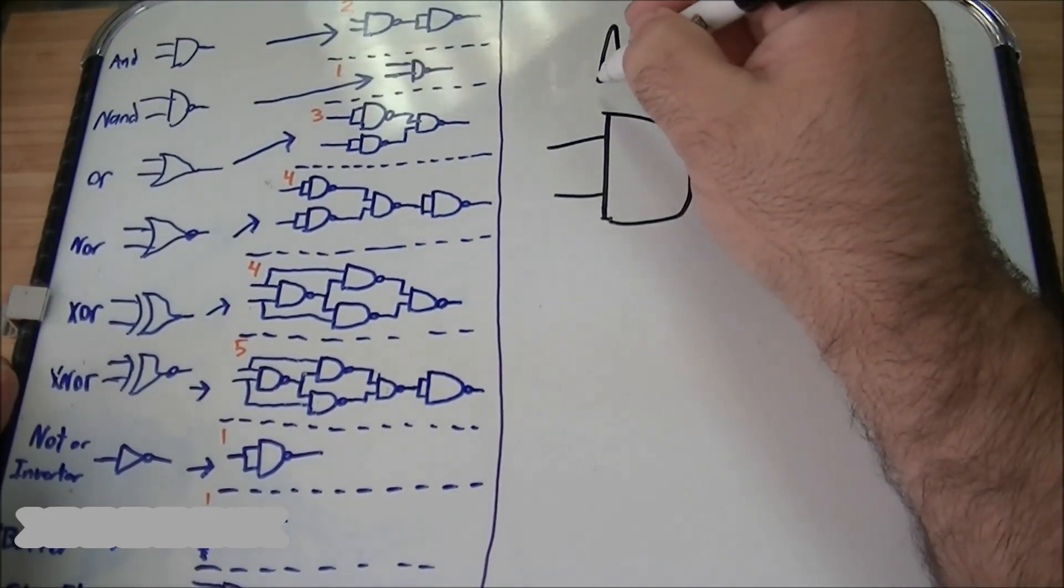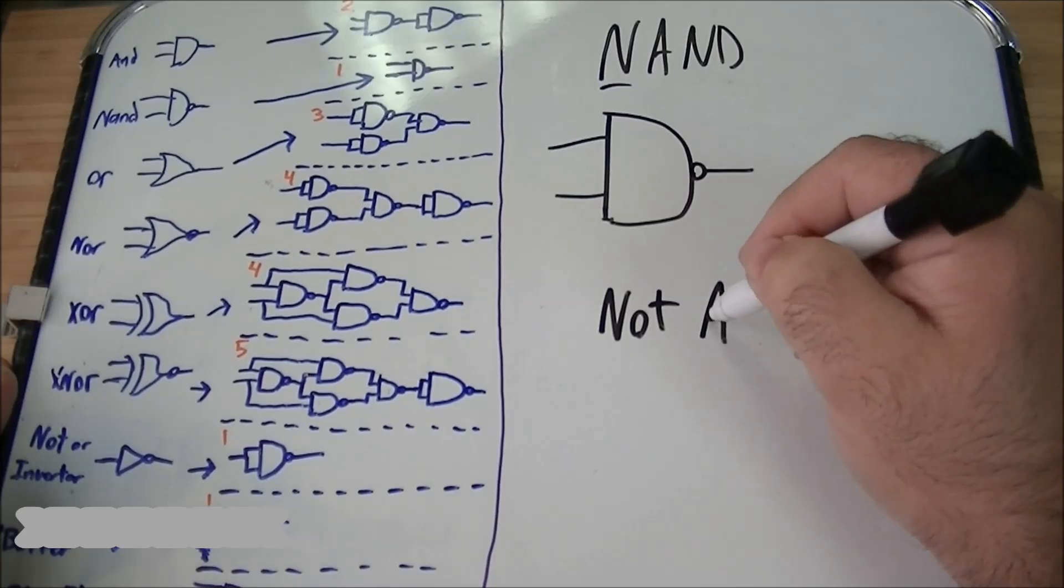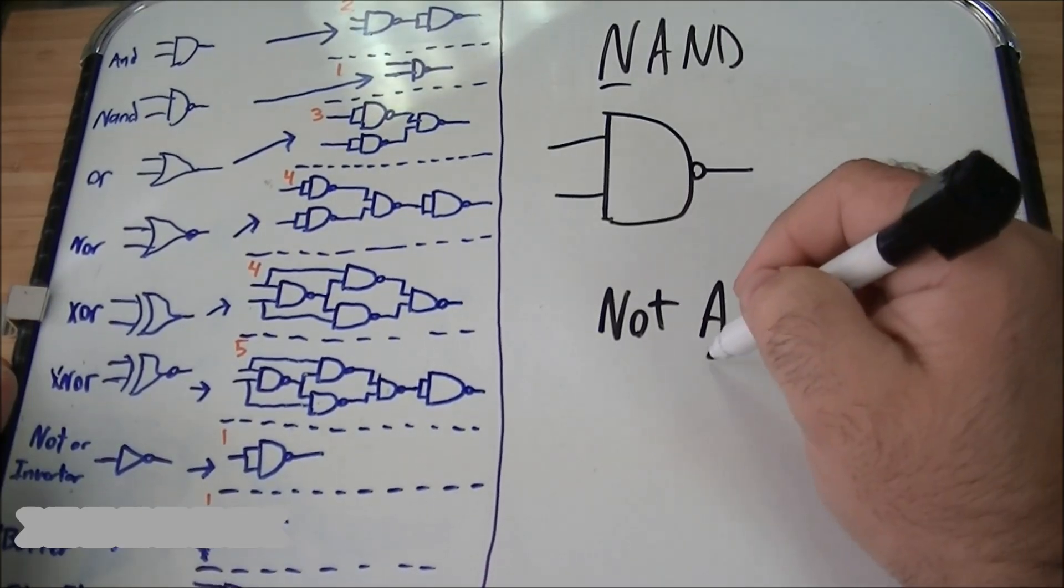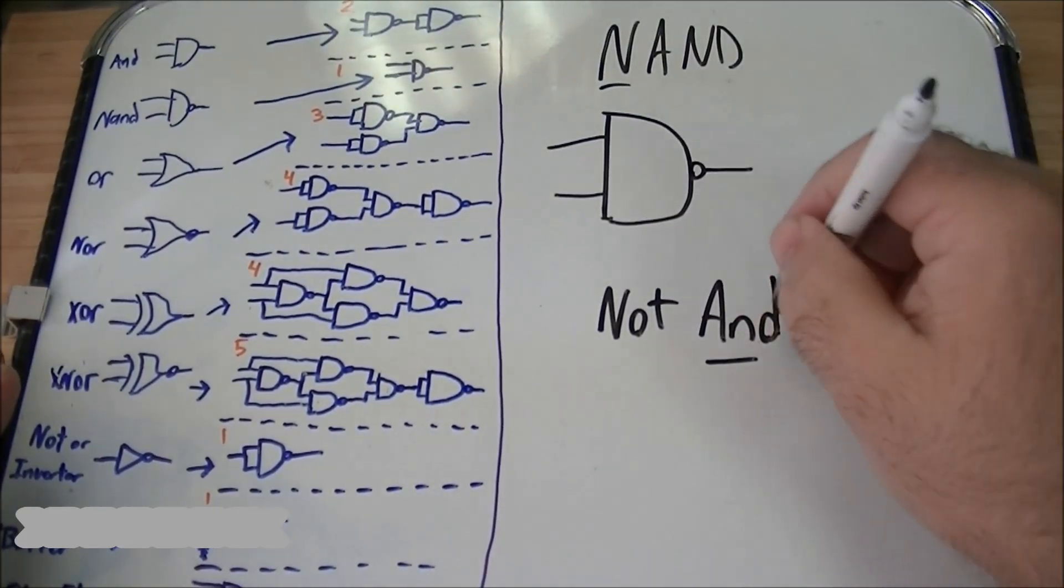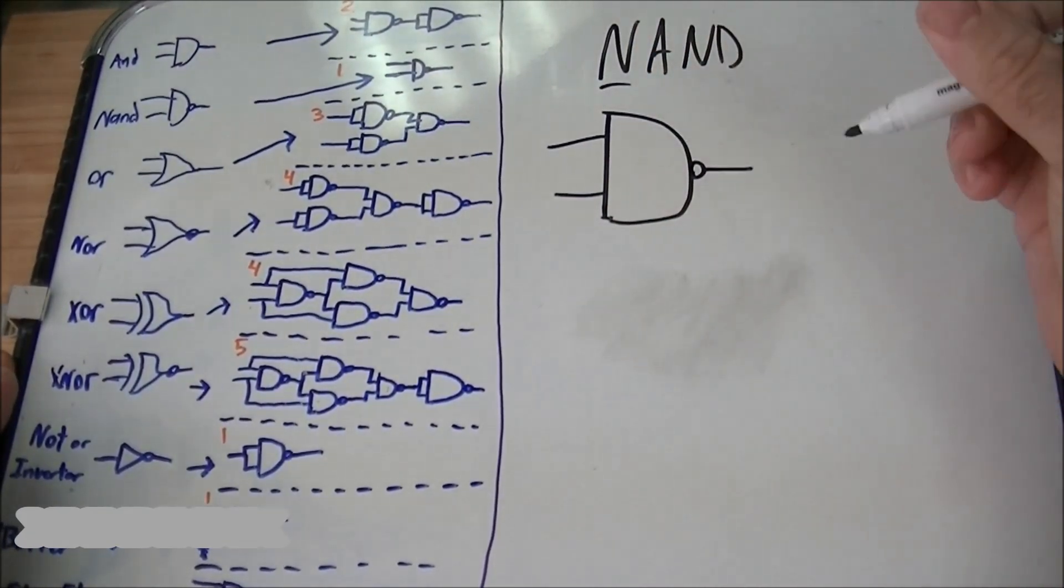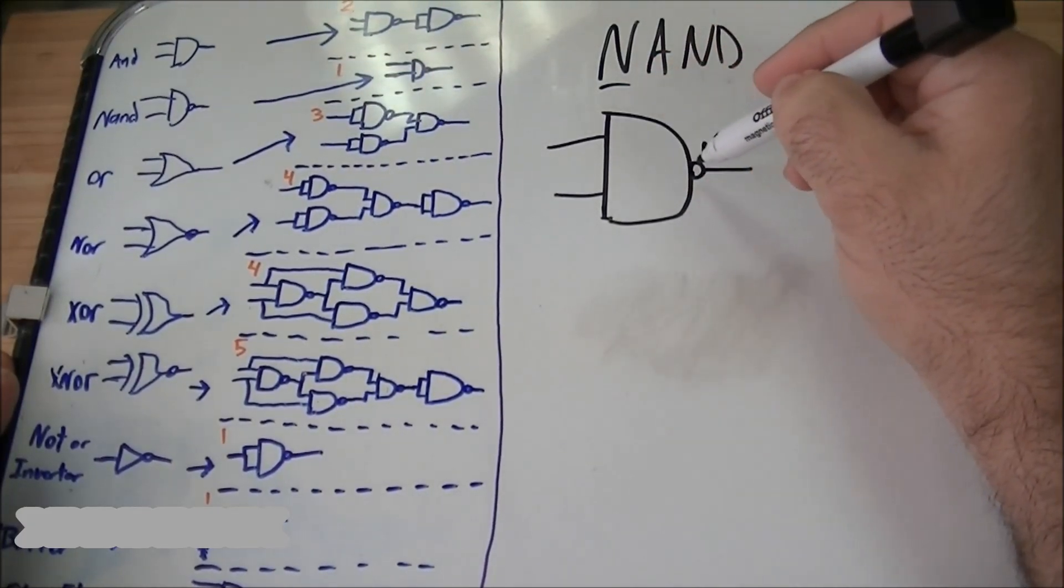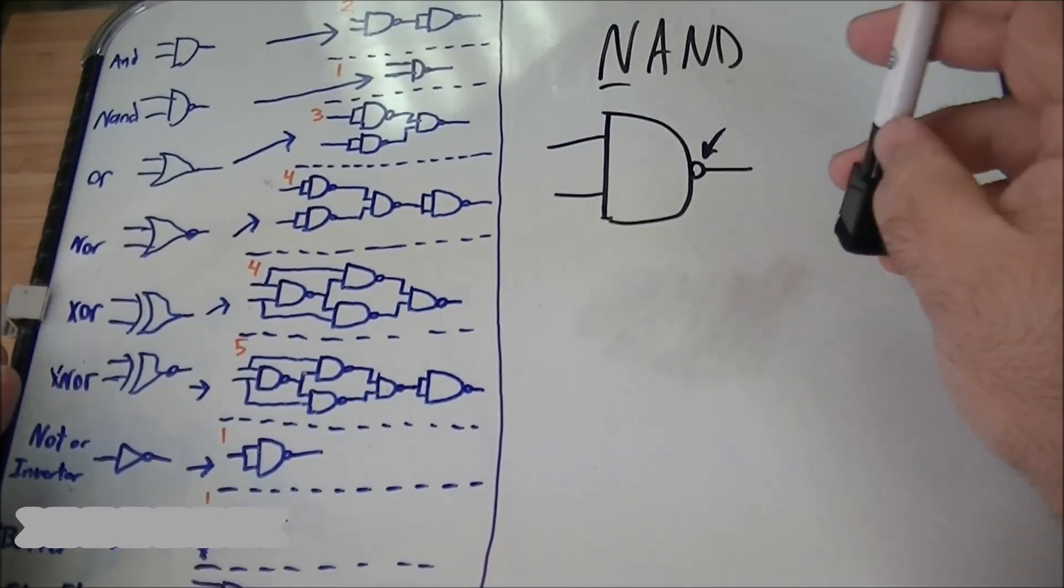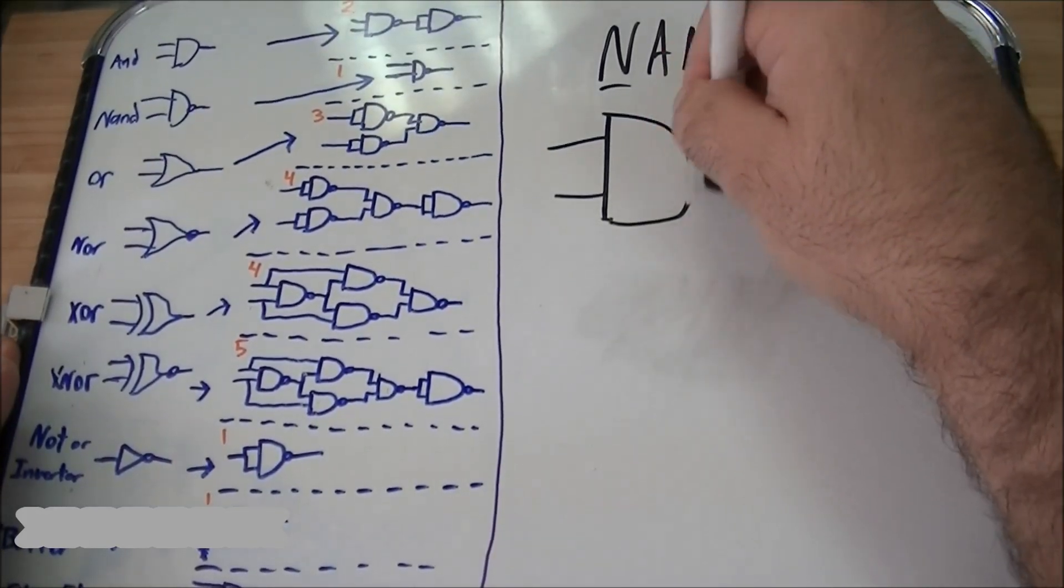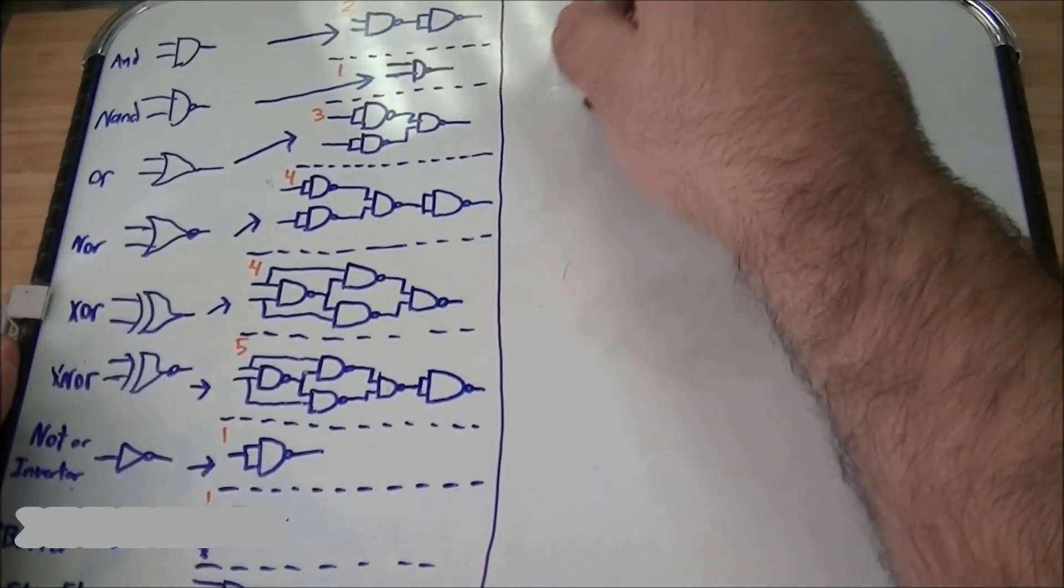NAND is actually short for NOT AND. Anything that has the N in the front is actually inverted. If you see an N in the front, you're going to see this circle here, which means that the output is actually inverted when it comes out.